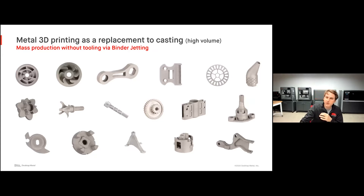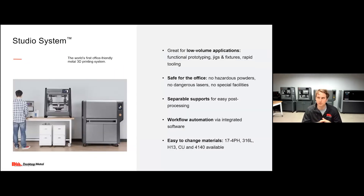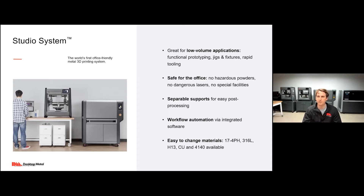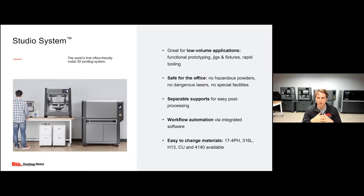The two printers we're going to be talking about today, both produced by Desktop Metal, are the Studio System — which you can see right behind me — the world's first office-friendly metal 3D printing system. It's great for those low-volume applications: functional prototyping, jigs and fixtures, rapid tooling, replacement parts. It's very safe for the office, has a fully automated workflow, and quite a few materials available.